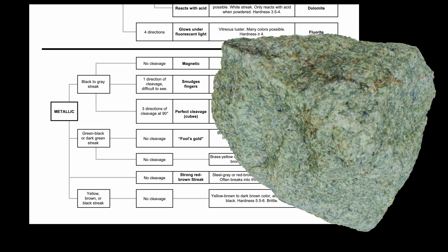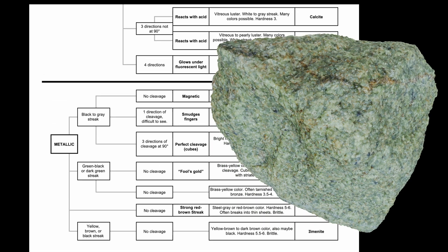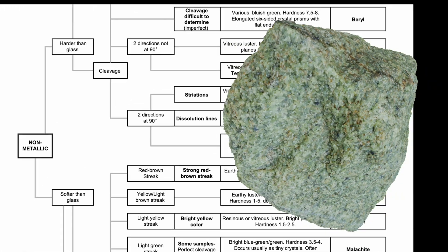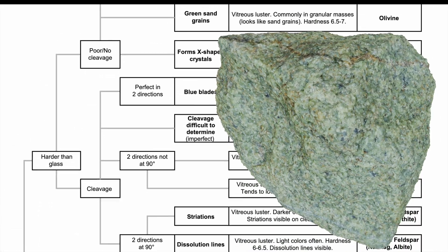Clearly, this particular sample does not have a metallic luster, so we know it's got to be one of the ones up here on the top. The next thing we would do is a hardness test, and we would use the Mohs hardness scale to figure out how hard approximately our sample is. This particular sample has a hardness greater than 5.5 on that scale, so we know that it is harder than glass. Therefore, we know we're going to be one of the samples on the top portion of this flowchart.